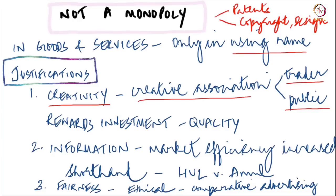Because marks can have this creative association, there was an incentive to invest in quality — a person can look at a mark and attribute quality to the product, so companies started to invest in quality. The second justification was that marks provided information. In a market where there are multiple players selling goods and services, there is a need to understand information about the product more efficiently — marks became a shorthand for supplying information about a product. You could see the logo of Tata, Suzuki, or Honda and immediately attribute certain things about the product just by looking at the logo.